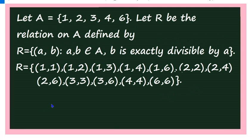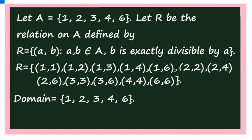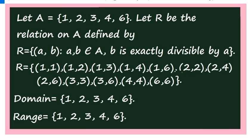Now we write the domain and range. For the domain, the first elements are 1, 2, 3, 4, 6 — all elements occur as a first element. Therefore, domain = {1, 2, 3, 4, 6}. And the range: all elements also occur as a second element, so range = {1, 2, 3, 4, 6}.